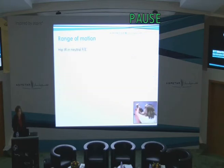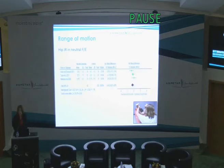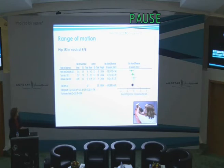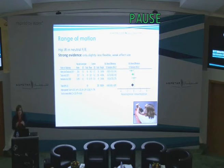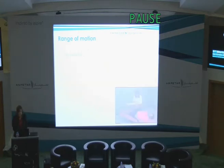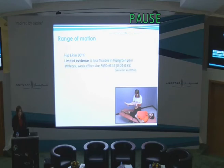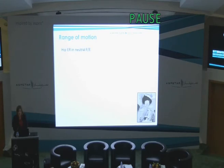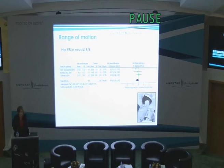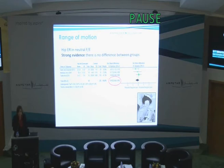Hip internal rotation in neutral flexion: three high-quality studies found that confidence intervals cross 0 in two studies and the SMD is very close to 0. There is strong evidence that this test is only a little bit less flexible in athletes with groin pain, with a weak effect size of 0.42. Hip external rotation in 90 degrees flexion showed only limited evidence from one moderate quality study, with a weak effect size of 0.47. Hip external rotation in neutral: the SMD even crosses 0, so there's strong evidence this test does not differentiate between groups, with an SMD of only 0.18.